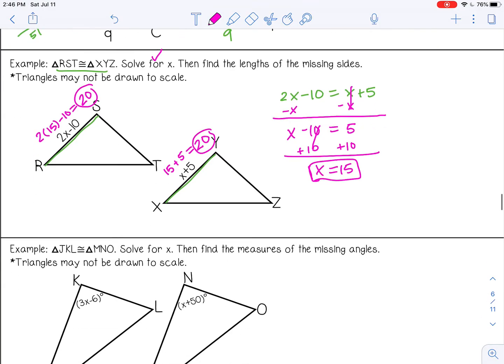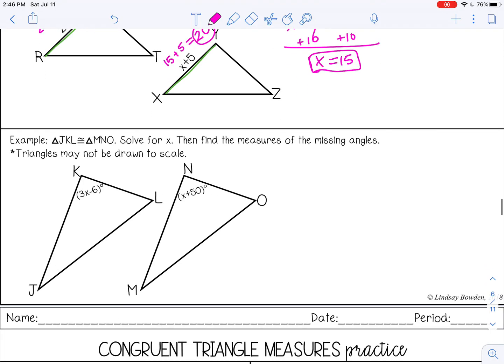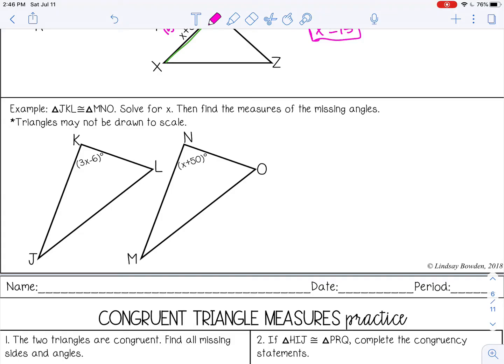One last example. Triangle JKL is congruent to triangle MNO. Solve for x, then find the measures of the missing angles. These are corresponding angles. They are equal, so I can set them equal to each other.